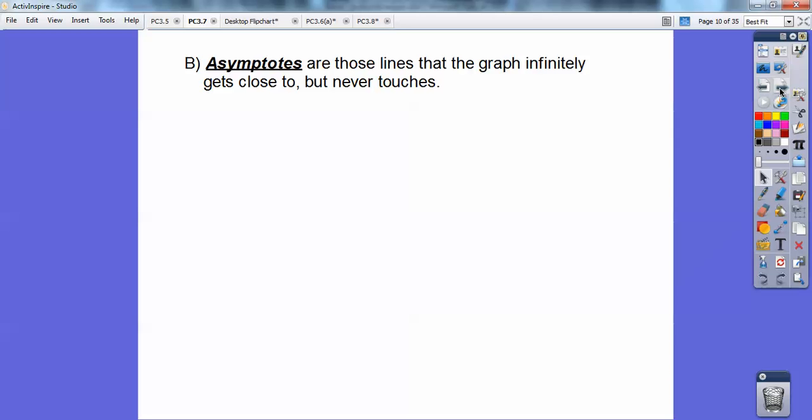And this horizontal asymptote is y equals 3. I'll show you why in just a second. So asymptotes are those lines that the graph infinitely gets close to, but usually doesn't touch. Sometimes it does, but usually doesn't touch. I put never, but it does sometimes. It just barely crosses them sometimes, and we'll find out later. So to find the vertical asymptote, you set the denominator equal to 0.